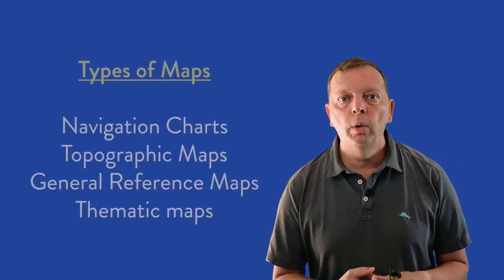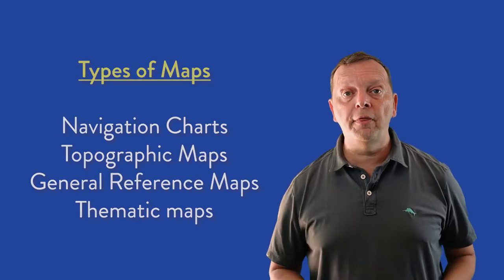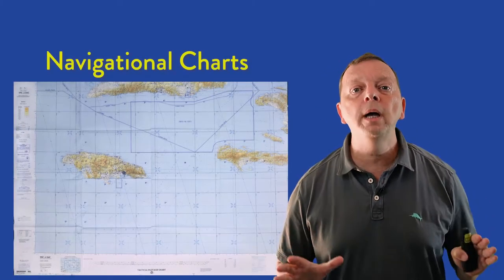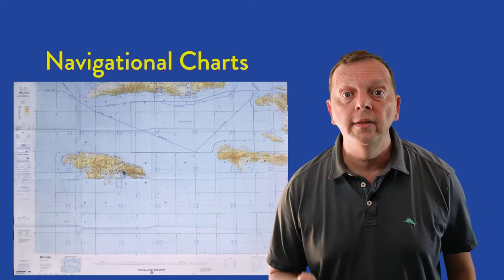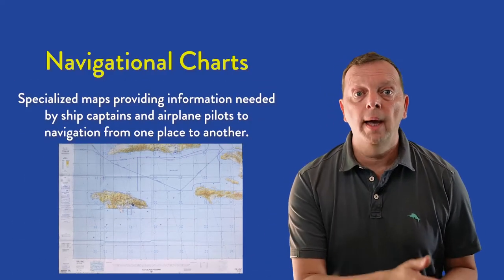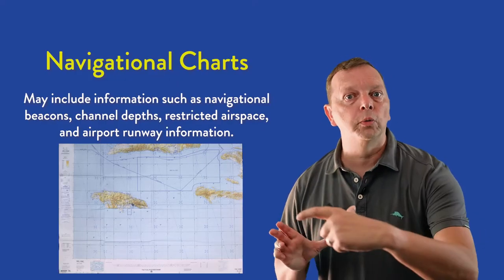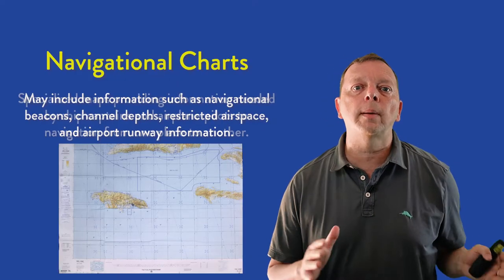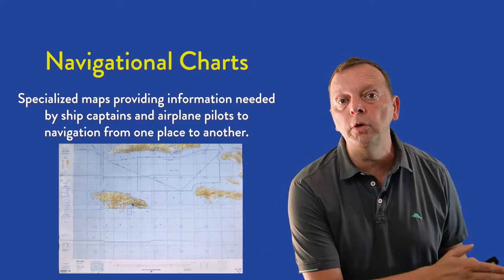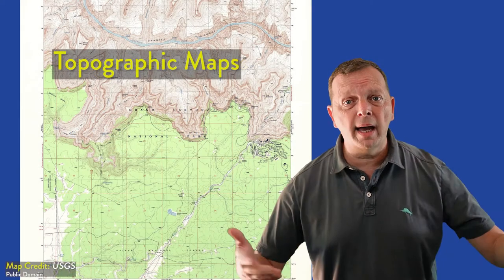I'll go over four, which are your navigational charts, topographic maps, general reference maps, and thematic maps. If you're an airline pilot or a ship captain, you'll be undoubtedly using what is called navigation charts. These are specially designed maps that provide things such as depths of channels, location navigational beacons, where there is restricted airspace, all those things that a pilot or a sailor needs to be able to move safely from point A to point B.